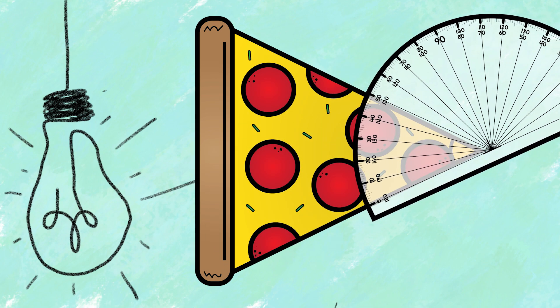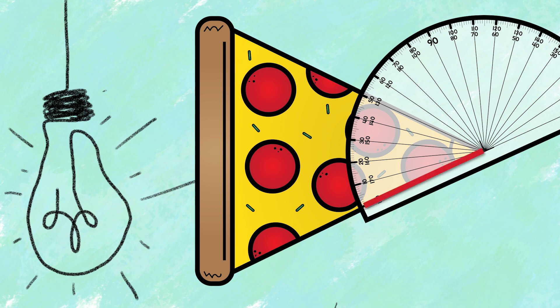Step two, we're going to line up the one ray with the bottom line on the protractor. Step three, we're going to look at where the other ray intersects. Ta-da!